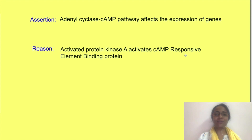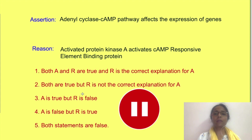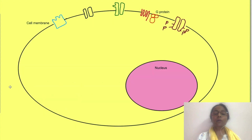Hello and welcome to Physiology Open. Try to solve this question on mechanism of action of hormones. In the question there are two statements: the first is an assertion and the second is the reason for the first statement. You have to choose from the following five options. You can pause the video and think about the answer. We will come back to the question at the end of the video. Now let's discuss the concepts on mechanism of action of hormones.